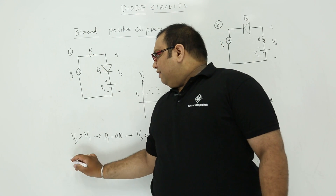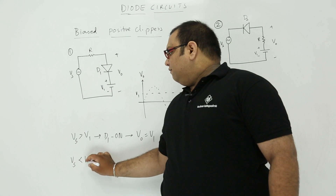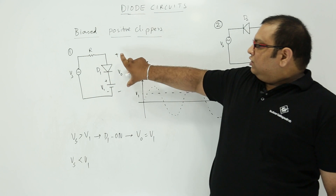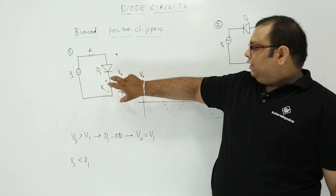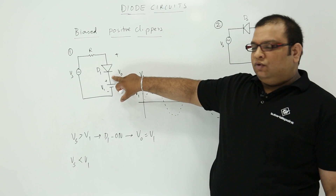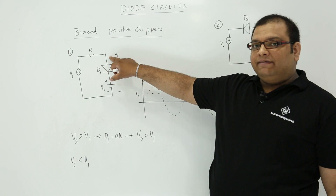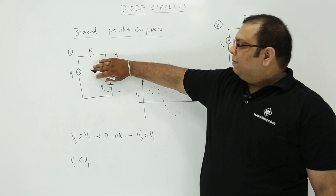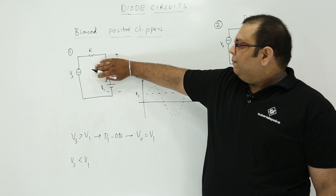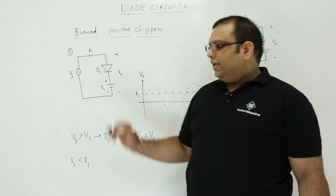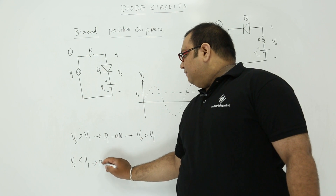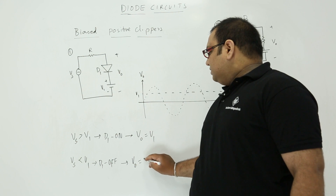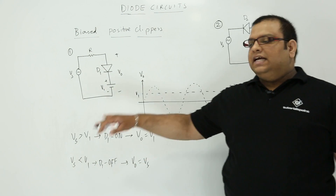Now let us consider the other case when Vs is less than V1. At this point, the voltage across the diode — Vs is at positive side but less than V1 which is applied at the negative side. Since positive side is less but negative side is more, the diode will be in open circuit, meaning reverse bias. So the output voltage is the same as Vs. When diode D1 is in off condition, output voltage is same as Vs.